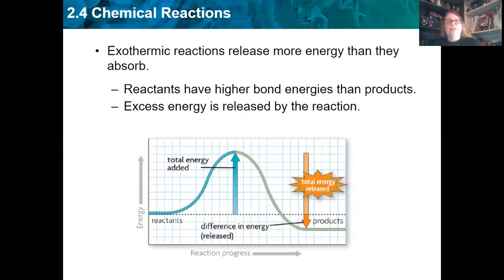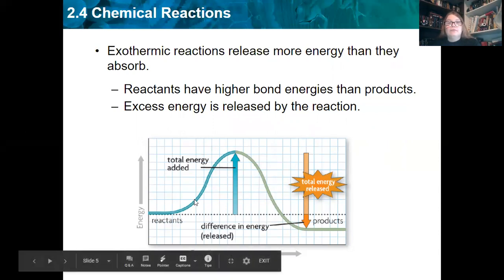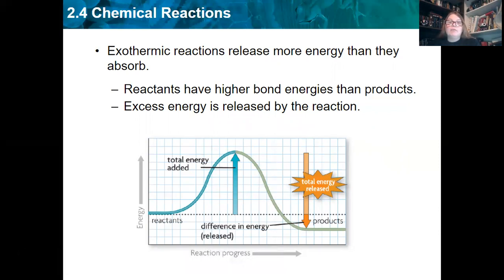So exothermic reactions release more energy than they absorb. This would definitely be like combustion. I light a fire, it releases a whole lot more heat energy than I put in. So the reactants have higher bond energy than products. So there's a lot of stored energy there, potential energy that I can tap. And excess energy is then released by the reaction. This can be a good thing because you need to take the energy stored in your food and release it so that your body can do stuff with it. So we see in this bell curve right here, where it says reactants on the left-hand side, it's higher than where it says products because they have more stored energy when they began than when they ended, which makes sense.